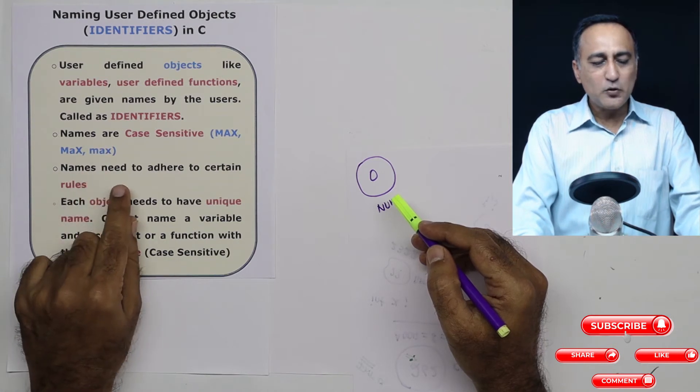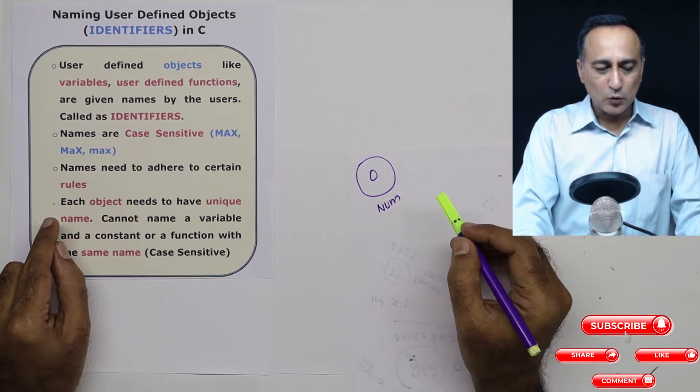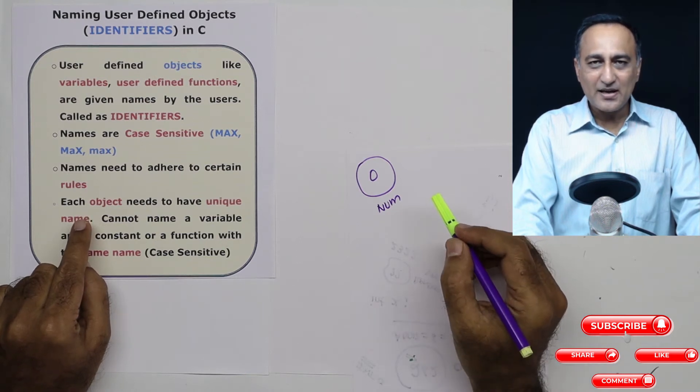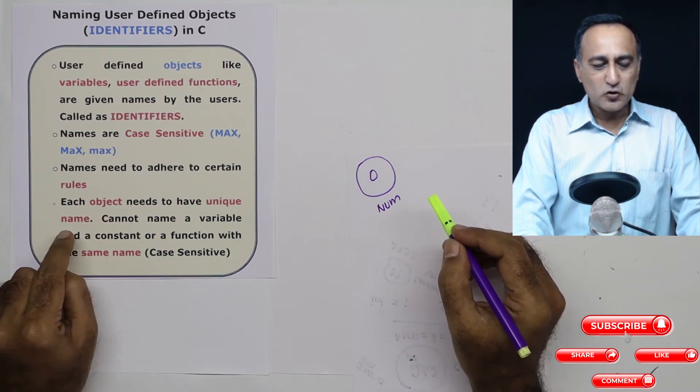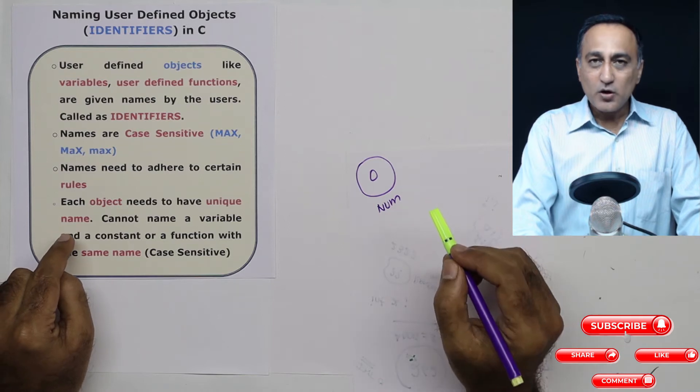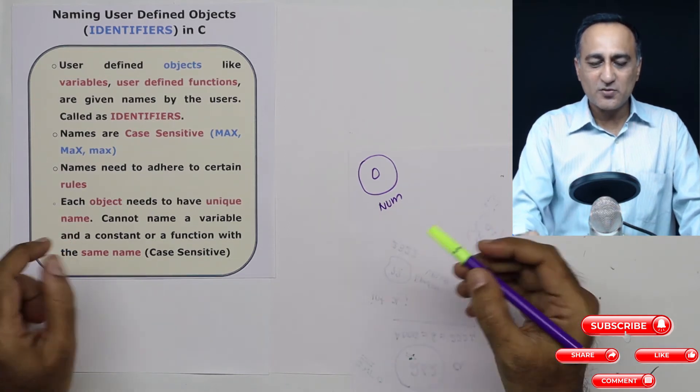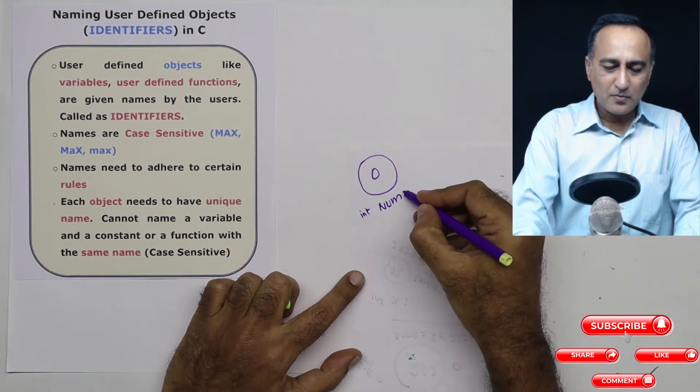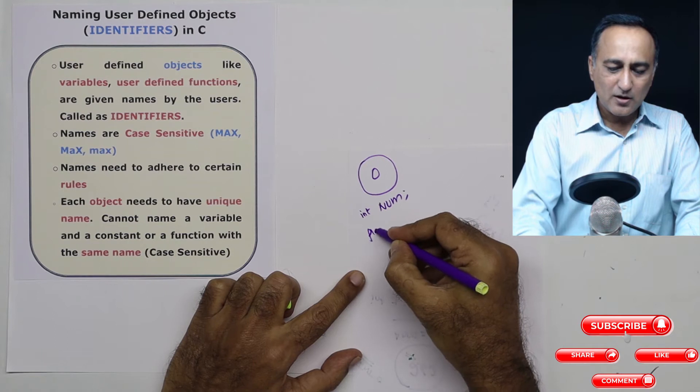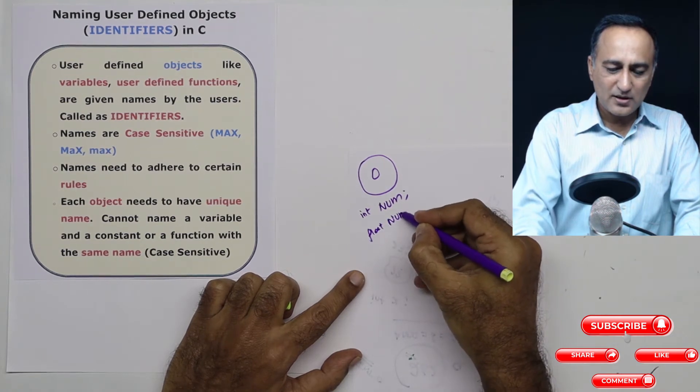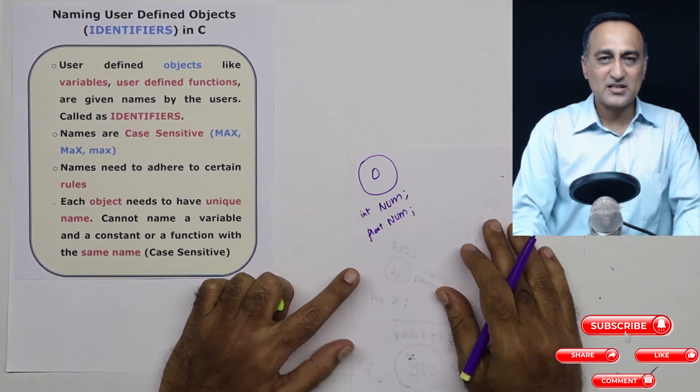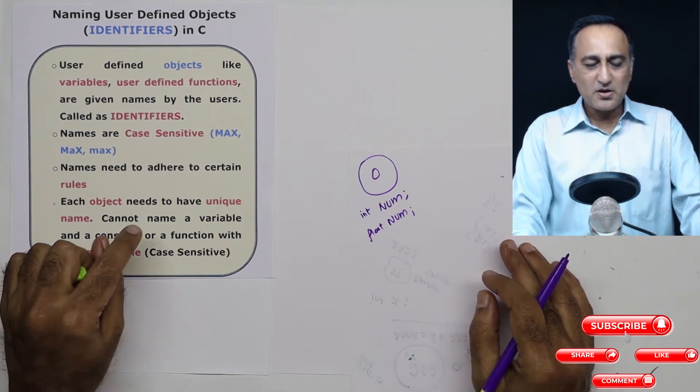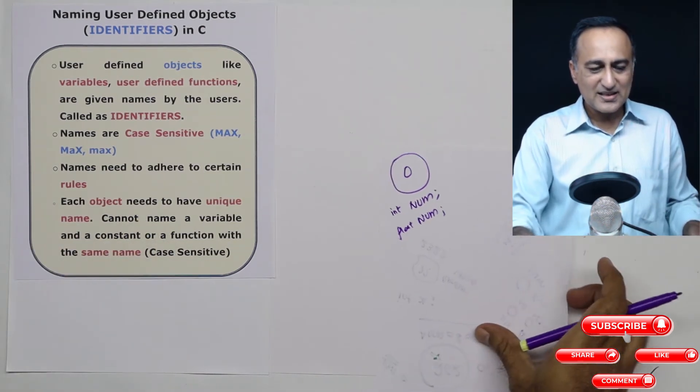Names need to follow certain rules. Each name or each identifier name or each object name should be unique. You cannot have a variable, constant, and a function with the same name. You cannot say int num on one line and float num on the next line. This is not acceptable. They all got to be different, and just be aware that the names are case sensitive.